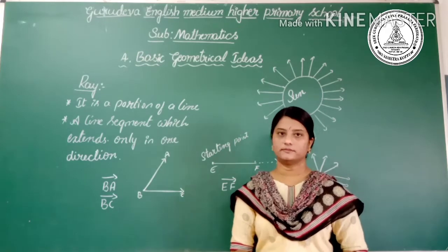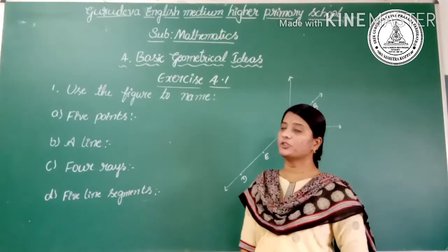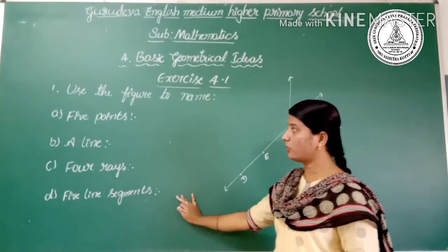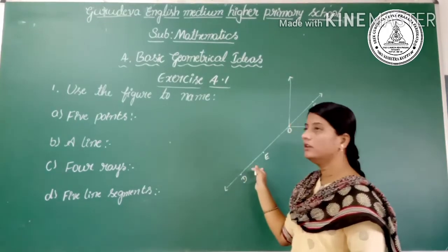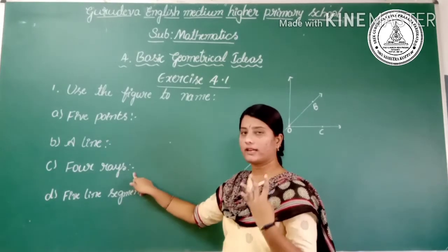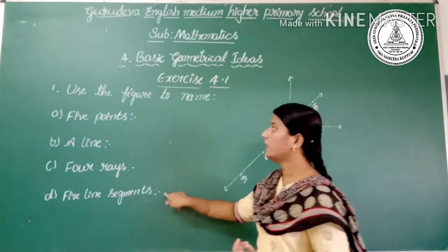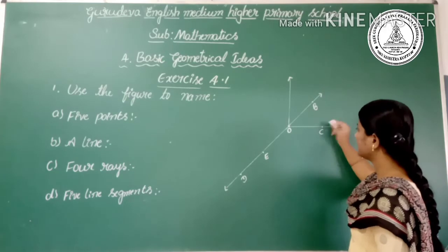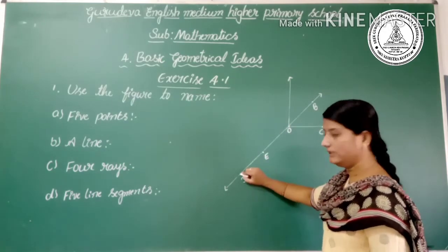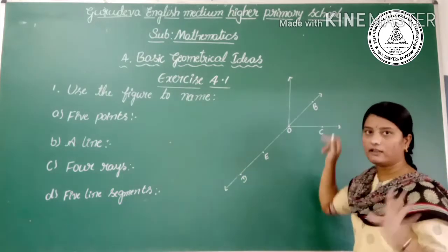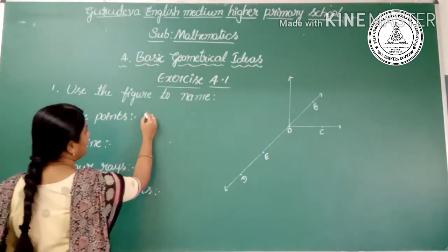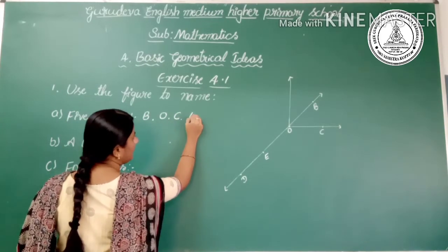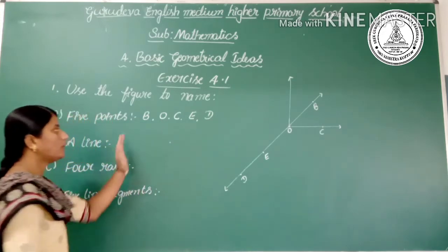Now we are going to solve Exercise 4.1. The first question says: use the figure to name. They have given a figure with some points — five points. We have to name a line, four rays, and five line segments. Let's identify the points: point B, point C, point O, point E, point D — there are five points.